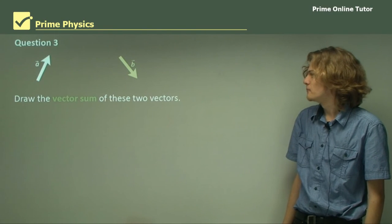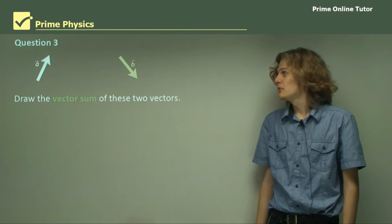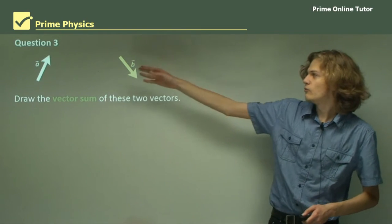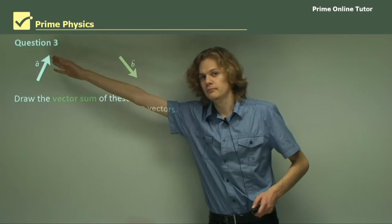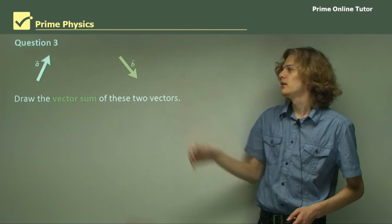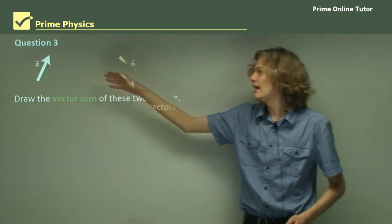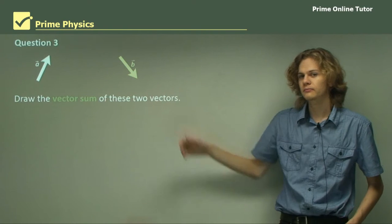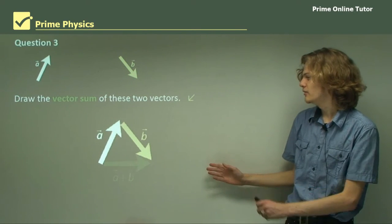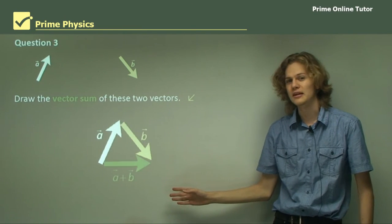Question 3: Draw the vector sum of these two vectors. To find the vector sum, we simply join the head of the first vector A to the tail of the last vector B. The resultant vector is the vector joining the tail of A to the head of B. Here we have an animation: A and B move together, and the resultant vector joins the tail of A to the head of B.